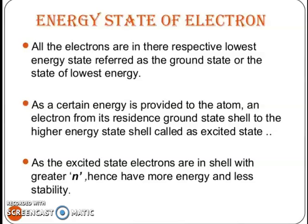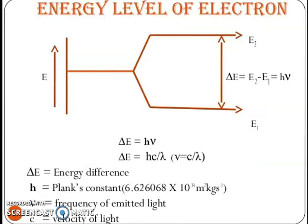When certain energy is provided to the atom, electrons move from the ground state shell to a higher energy state shell called the excited state. Excited state electrons are in a shell with greater n, hence they have more energy than the lower state. For energy levels E1 and E2, you calculate ΔE = E2 − E1 = hν. The relation is hν = c/λ, and frequency ν = c/λ. So the key quantities are: energy difference, Planck's constant, frequency of emitted light, and velocity of light.